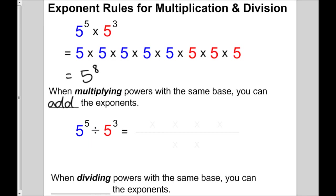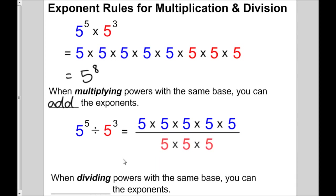Now let's look at what happens if we divide. So again, 5 to the 5 means that. If we're dividing by 5 to the 3, BEDMAS tells us we can divide and multiply in any order. So I'm going to divide 5 with 5 — that gives me 1. I can do the same thing again to get 1. And then this 5 and this 5 divided together gives me 1.